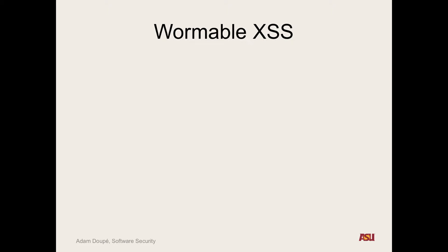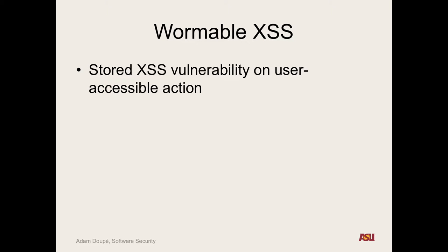This mainly occurs in social networking web applications. If there exists a stored cross-site scripting vulnerability on a user-accessible action — think about a profile page on Facebook — you can inject JavaScript code. When anyone visits your profile, they execute that JavaScript, which can then edit their own profile to copy itself. When anyone visits their profile, they execute that code too, spreading throughout the network. It's a self-propagating worm — JavaScript code able to completely clone itself.